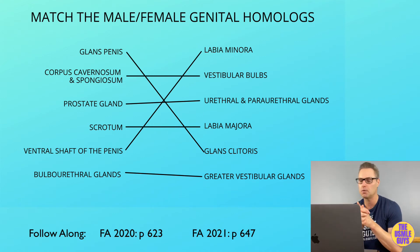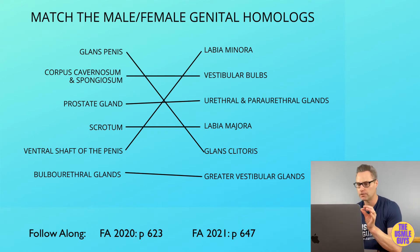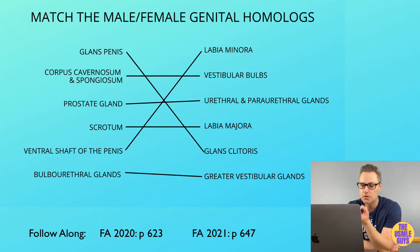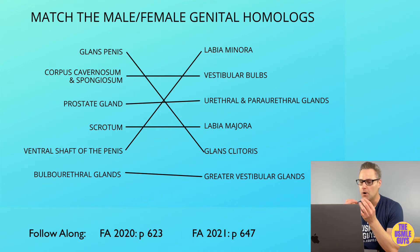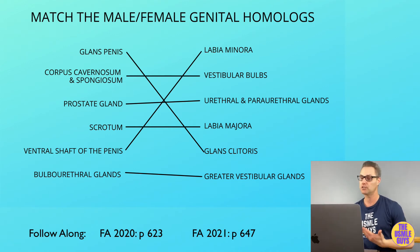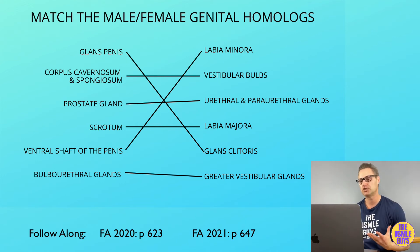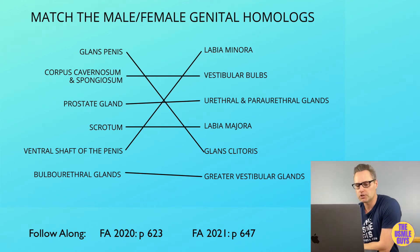Epispadias is associated with exstrophy of the bladder. The 5-alpha reductase deficiency results in insufficient production of DHT from testosterone. As a result, males are born with external genitalia that either aren't clearly one sex or the other, or are often mistaken for female genitalia, since the external genitalia haven't been exposed to enough DHT. Once puberty occurs and testosterone spikes, development should ensue.